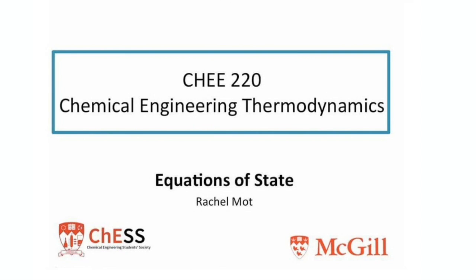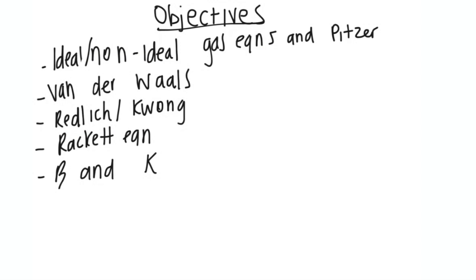Hey guys, today I am going to be talking about equations of state. The objectives for my video today are going to be to go through ideal and non-ideal gas equations, and then how to use the Pitzer method. Then I'm going to show you Van der Waals equation, Redlich-Kwong, the Rackett equation, and then I'm going to go over what beta and kappa are. These are all really useful — you're definitely going to use these in this class.